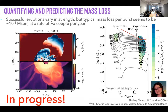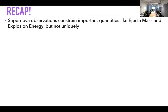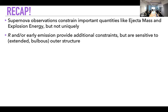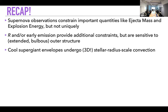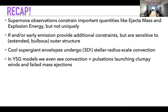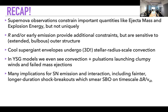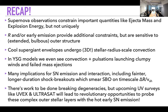To recap: observations constrain important quantities like ejecta mass and energy, but radius and early emission provide additional constraints that are sensitive to the average surface structure. Red supergiant envelopes undergo stellar-radius-scale convection — not all stars are spheres, and some have really rich 3D landscapes even without rotation or binarity. Yellow supergiants show convection and pulsations with clumpy winds and failed ejections. There are many implications for supernova emission — longer duration shock breakouts and degeneracies to break — and I'm really excited about upcoming UV surveys like UVEX and ULTRASAT that probe exactly this hot regime.